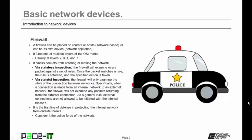Firewalls function at multiple layers of the OSI model — usually you will find them operating at layers 2, 3, 4, and 7. Firewalls block packets from entering or leaving the network, and it can do this through one of two methods. It can use stateless inspection, where the firewall will examine every packet against a set of rules. Once the packet matches a rule, the rule is enforced and the specified action is taken. The other method is stateful inspection, where the firewall will only examine the state of the connection between networks. When a connection is made from an internal network to an external network, the firewall will not examine any packets returning from the external connection.